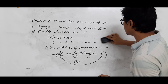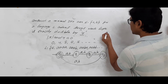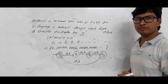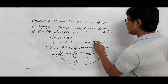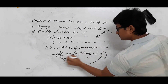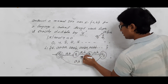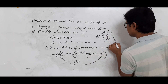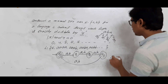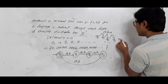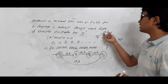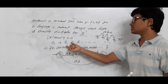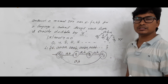Now let's take a counter-example — a string that does not belong to language L. Take ABA, whose length is 3. Is 3 divisible by 4? No, because it gives remainder 3. Q0 on A goes to Q1. Q1 on B goes to Q2. Q2 on A goes to Q3. Q3 is a non-final state, so the string ABA is not accepted by the DFA.